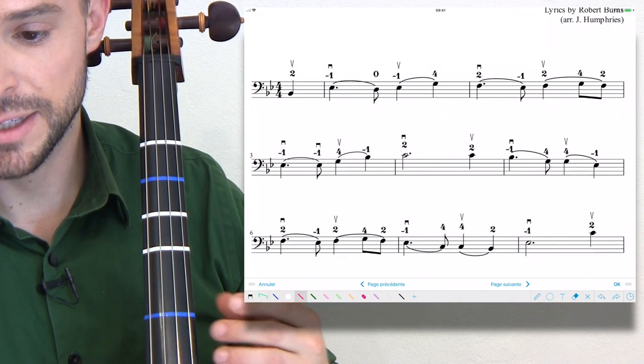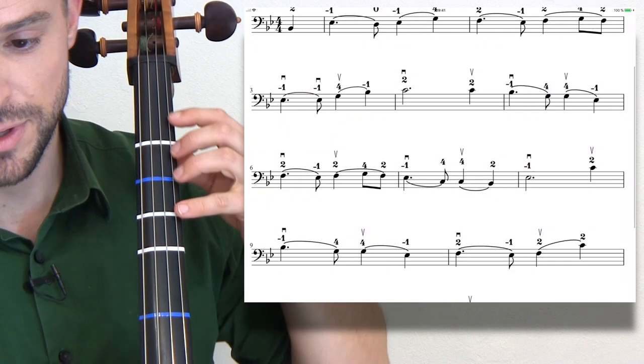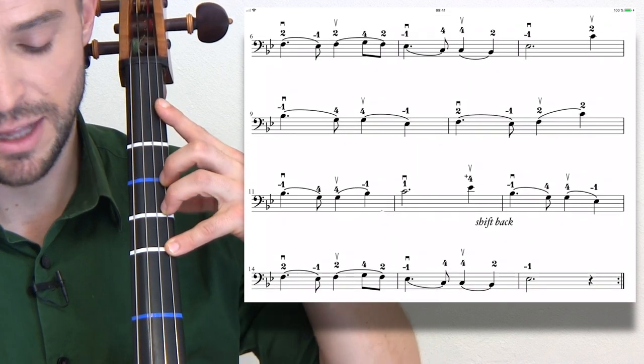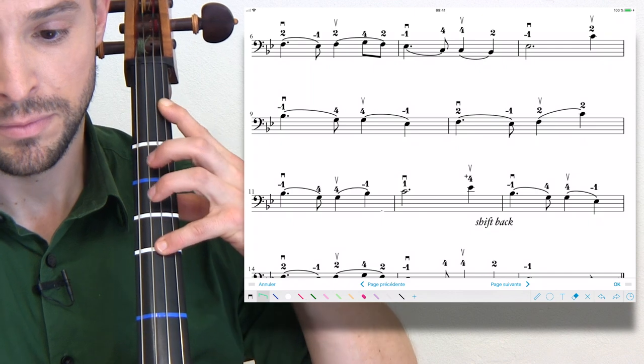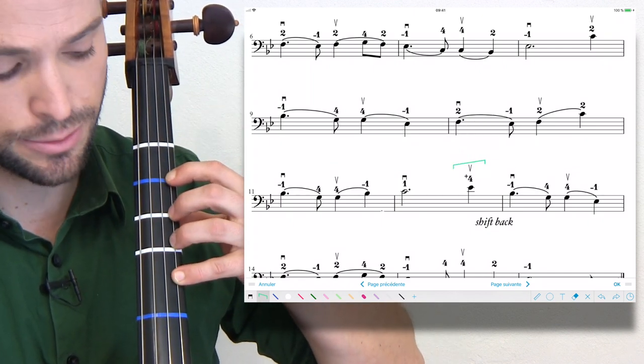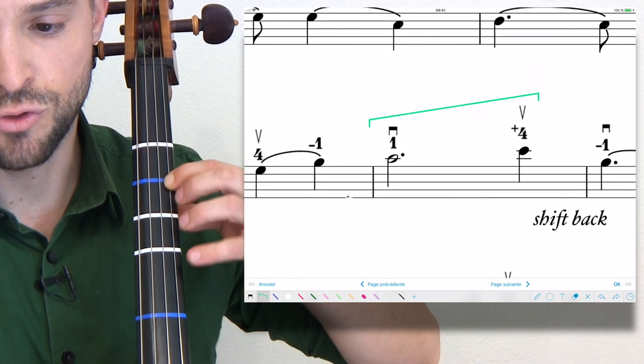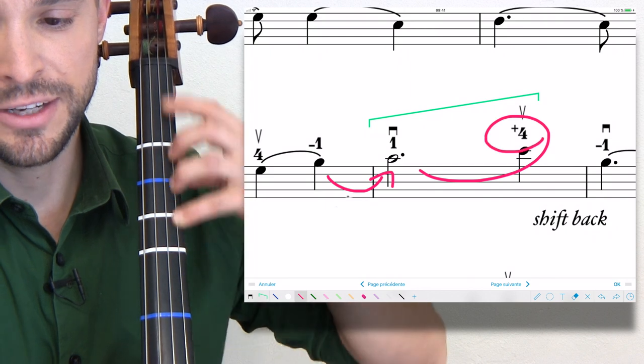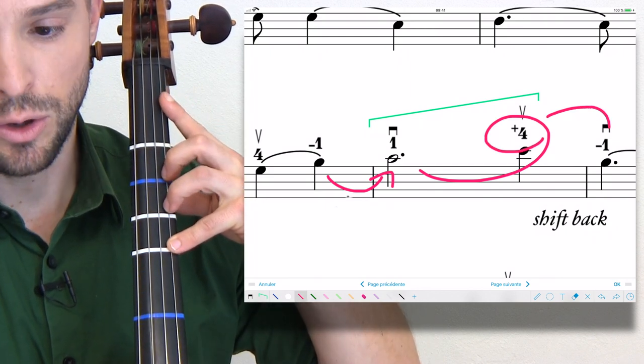So there's that, and let's look at measure 12. You see a shift up, slide up. So you're here in measure 11, slide up your one to where the C is, relax your hand, drop your four on that E flat, and then shift back to your low one.